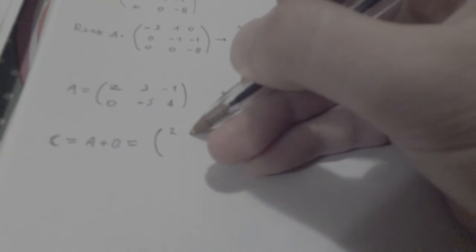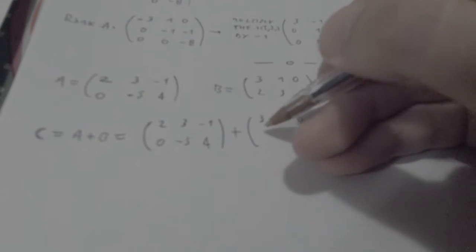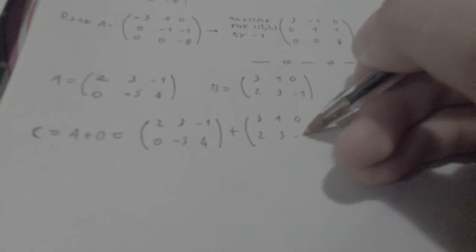So A plus B is going to be the addition between our two matrices, so 2, 3, negative 1, 0, negative 5, 4, plus 3, 1, 0, 2, 3, negative 1.